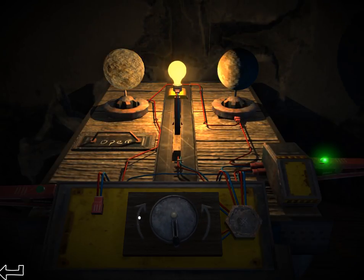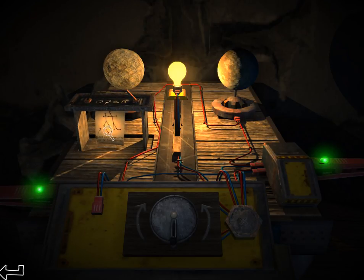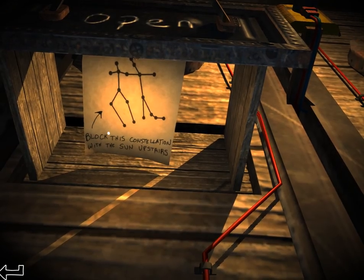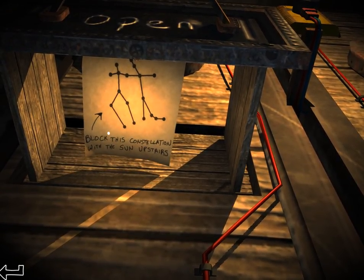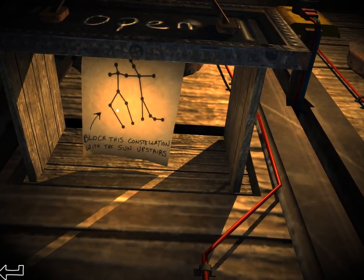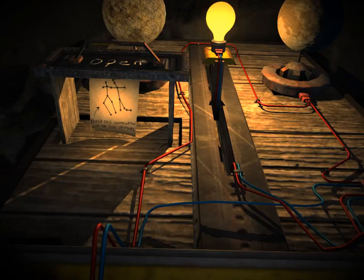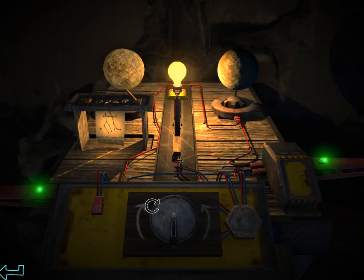So one of these settings works, and that's the one where the, as we saw, it's totally fully lit up, but not too much light. We need to block this constellation with the sun upstairs. What do I do with that?